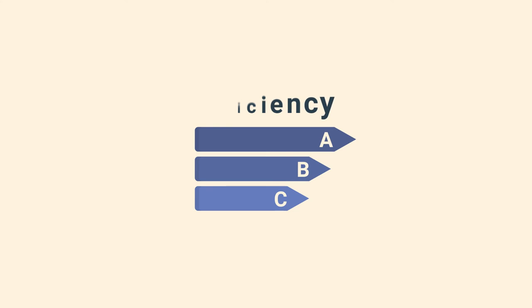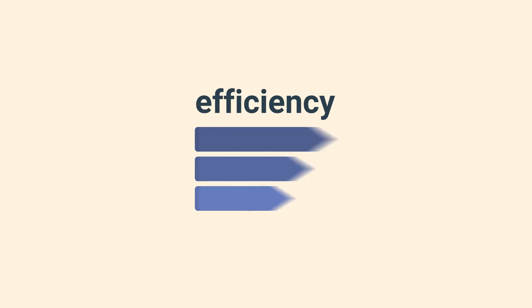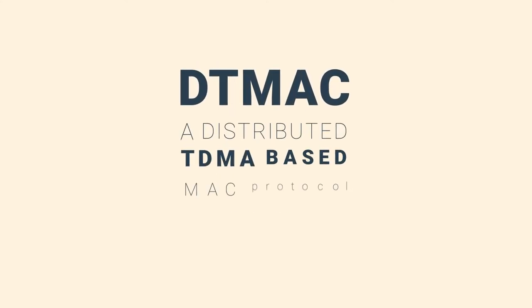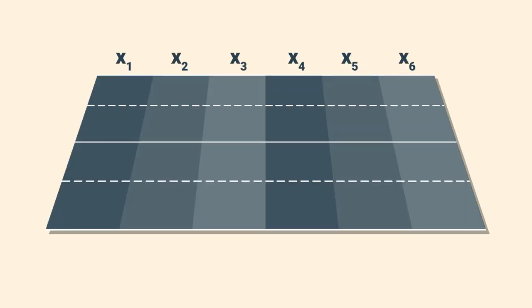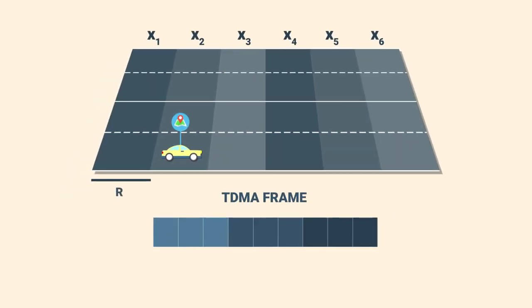In order to improve TDMA efficiency in VANETs, we proposed a fully distributed TDMA-based MAC protocol, which does not rely on an expensive infrastructure. DTMAC uses vehicles' locations and a slot reuse concept to ensure that vehicles in adjacent areas have a collision-free schedule.